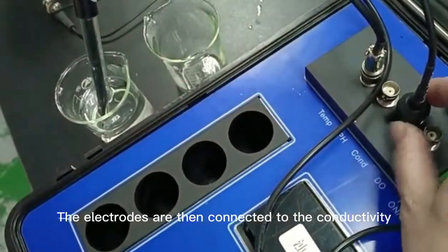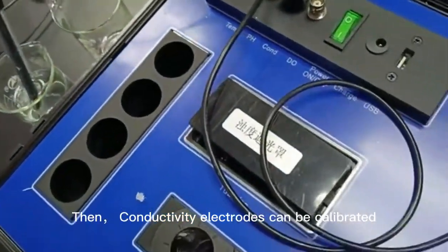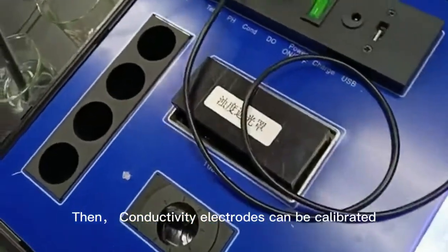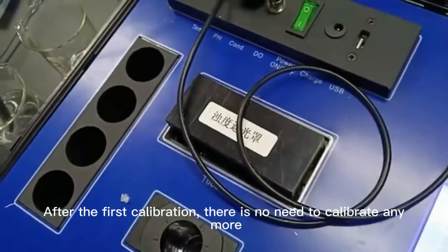The electrodes are then connected to the conductivity meter. Then, conductivity electrodes can be calibrated. After the first calibration, there is no need to calibrate anymore.